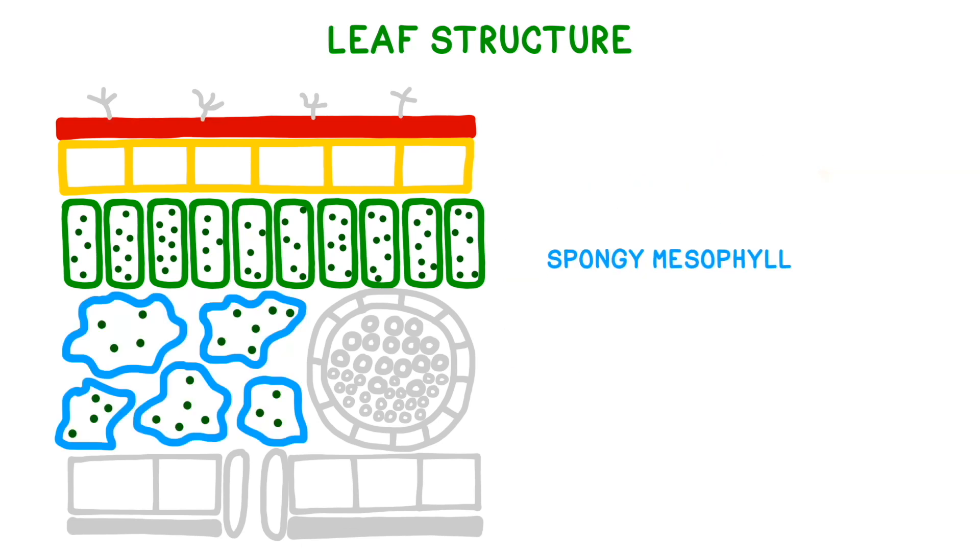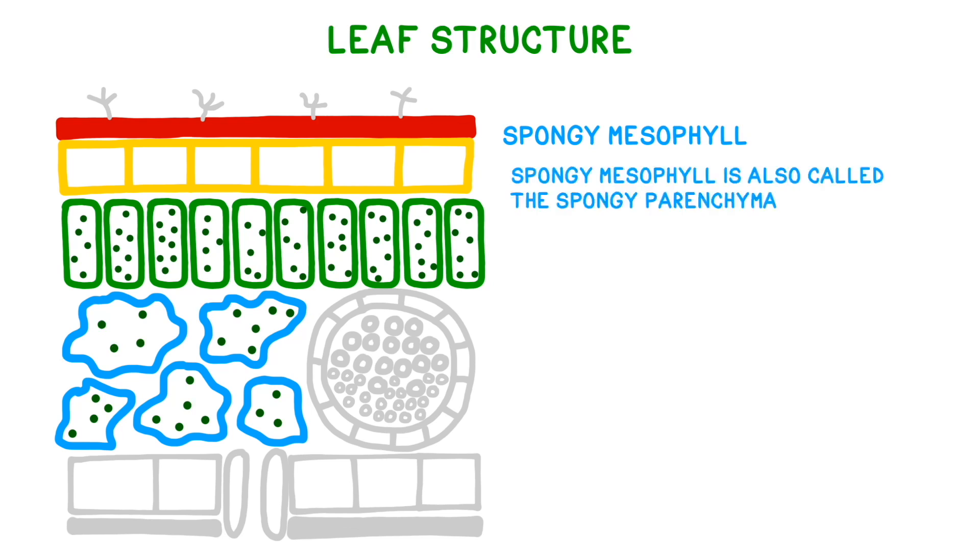Beneath the palisade mesophyll is the spongy mesophyll. The spongy mesophyll can also be called the spongy parenchyma. These cells are more irregularly shaped relative to the palisade mesophyll, but they do contain a few chloroplasts so some photosynthesis does take place here.